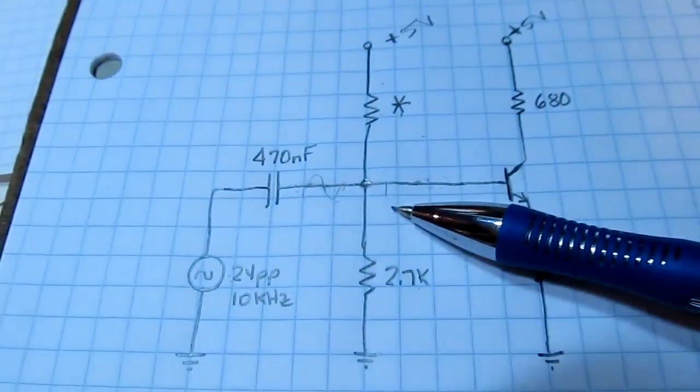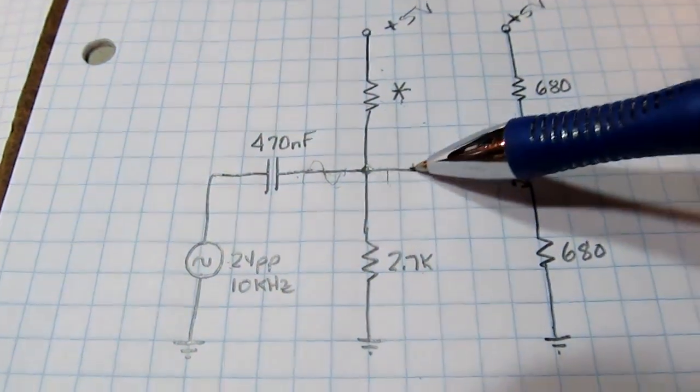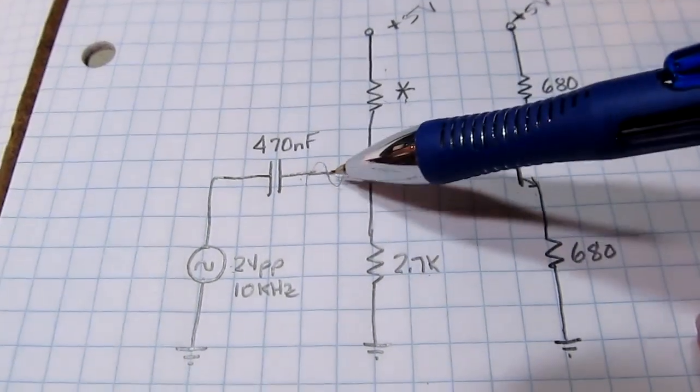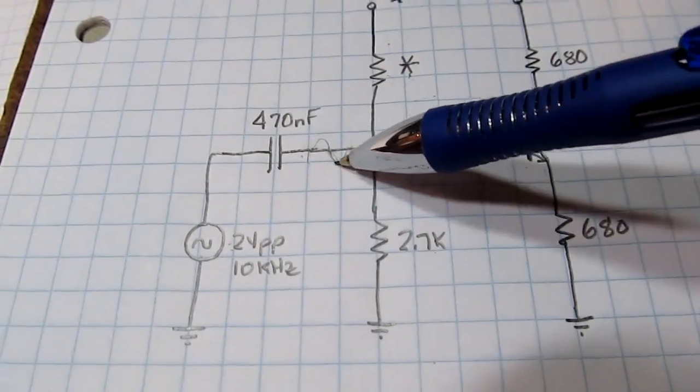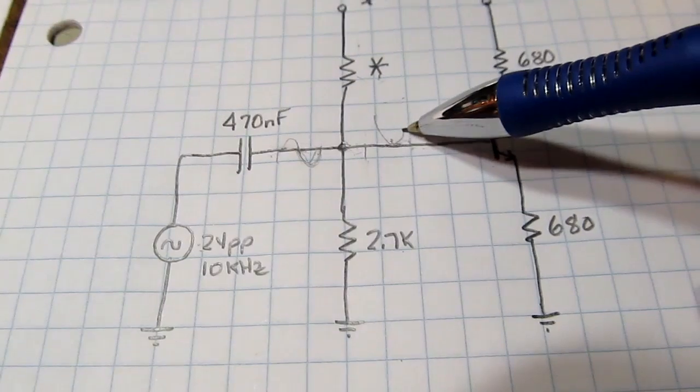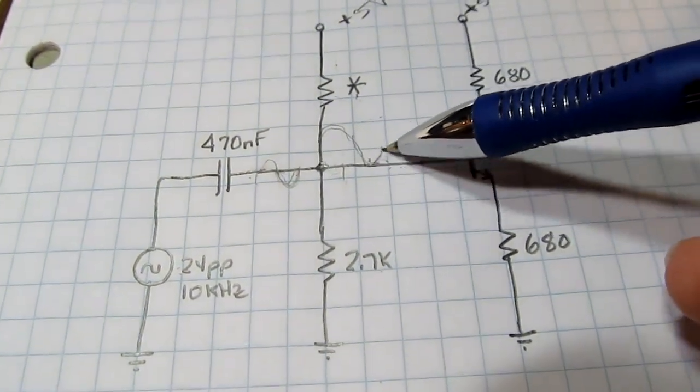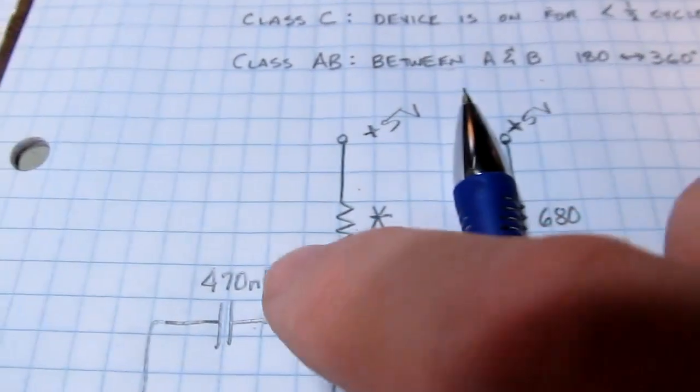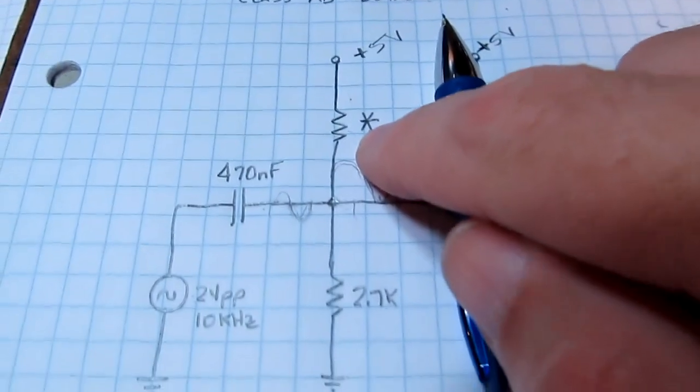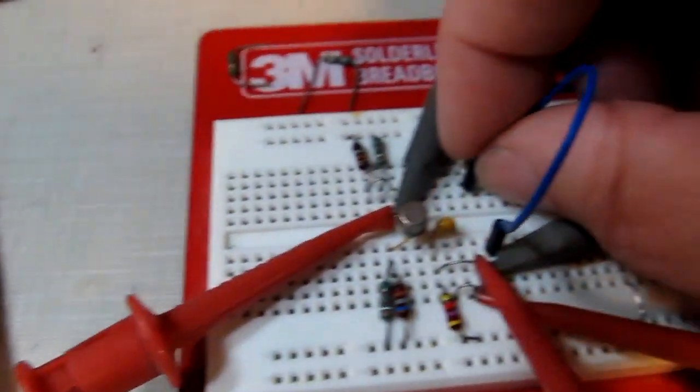So if we move that bias point up even more, instead of being at 600 millivolts, move it up to about 1.6 volts, now this one-volt lower half cycle, this waveform will come down just to that bias point. So the transistor will be on all the time. That'll put us in class A mode. So if I change that resistor from 36k, I change it to 10k, that's going to raise that bias point up to about 1.6 volts.